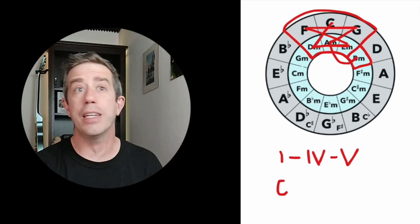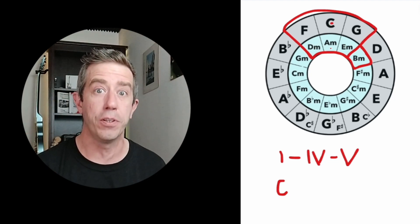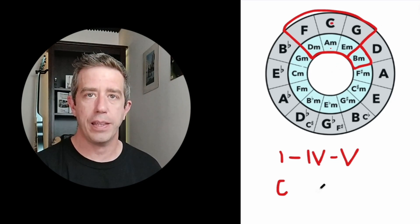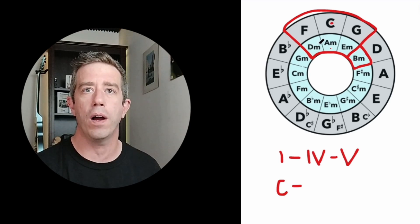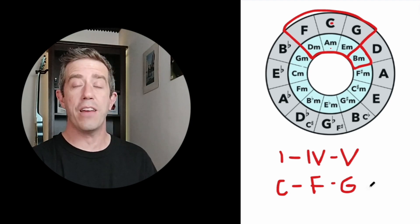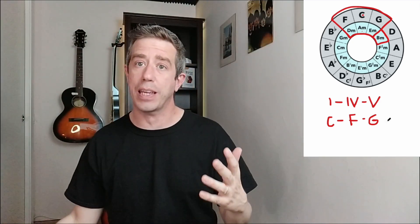So if you see a one-four-five in the key of C: the one is C — that's our key. What's the four? Count one, two, three, four — that's F. What's the five? One, two, three, four, five — that's G. So a one-four-five in the key of C is C, F, G. Back to one again. That's a one-four-five in the key of C.